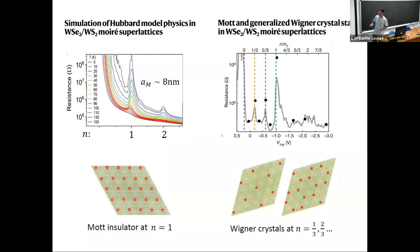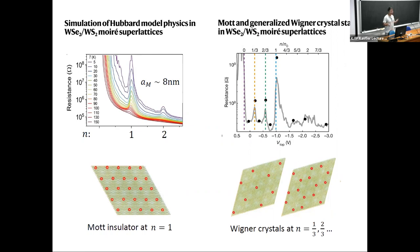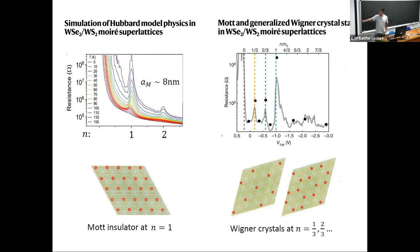The Berkeley group observed not only the Mott insulator and band insulator, but also insulating states at fractional fillings including one-third and two-thirds. These were quickly understood as generalized Wigner crystals. Taking the limit of kinetic energy going to zero on a triangular lattice, once you include on-site repulsion as well as first-neighbor repulsion, crystal states form at one-third and two-thirds filling. By now many more Wigner crystal phases have been observed, all understood by the extended Hubbard model on the triangular lattice in the strong coupling regime.